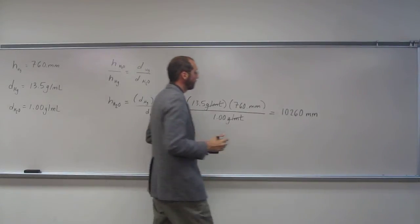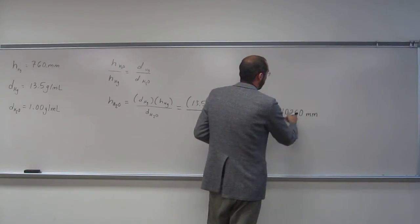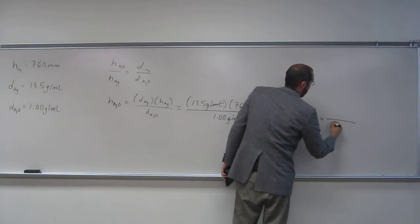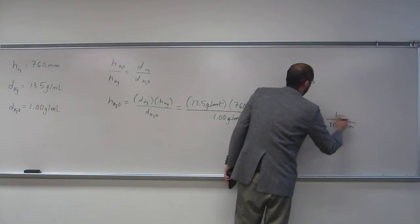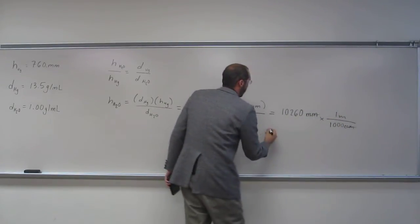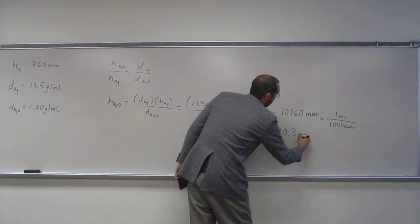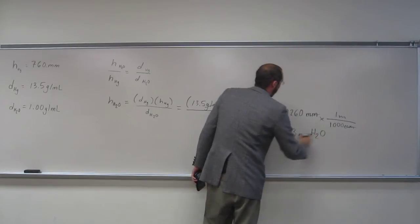So to three significant figures, well, we'll make this meters. So divide by 1,000. That gives us 10.3 meters of water.